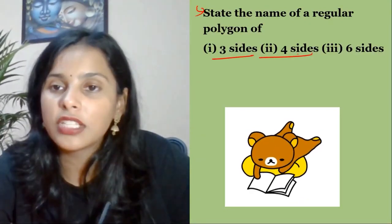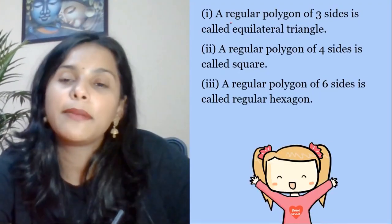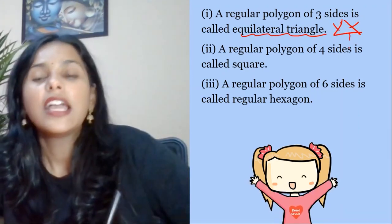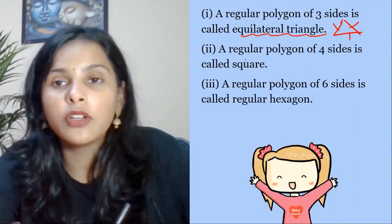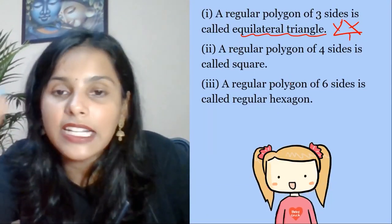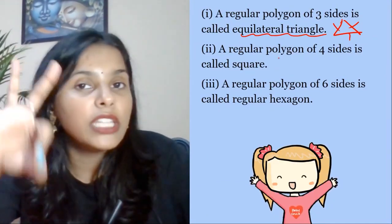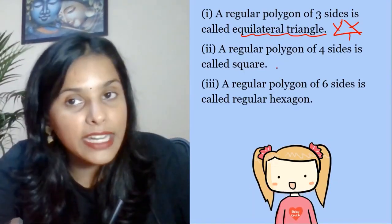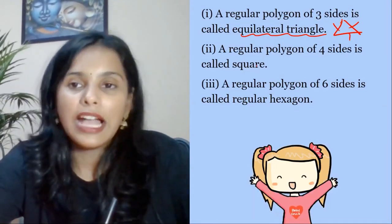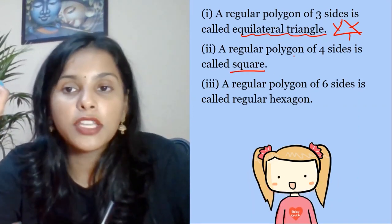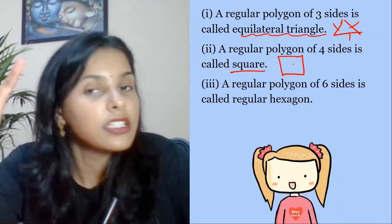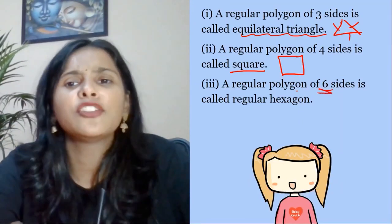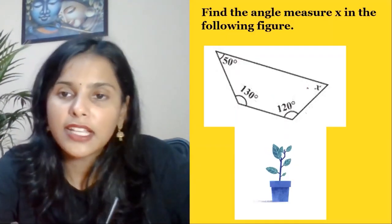State the name of a regular polygon of three sides, four sides, and six sides. Three sides — my kids, equilateral triangle. A regular polygon is one where all sides and all angles are equal. So the three-sided regular polygon is an equilateral triangle, not a normal triangle. Four sides — square, because a square has all four sides equal and all four angles equal to 90 degrees. And six sides is a regular hexagon.